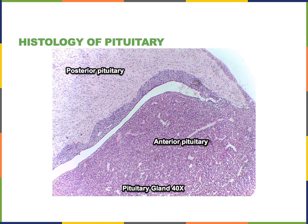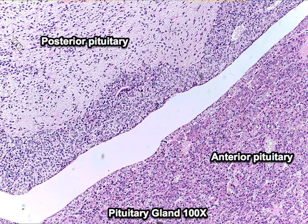Here is another slide showing the histology of the pituitary gland at high magnification, demonstrating the dark staining in the anterior pituitary gland in contrast to the light staining of the posterior pituitary gland.